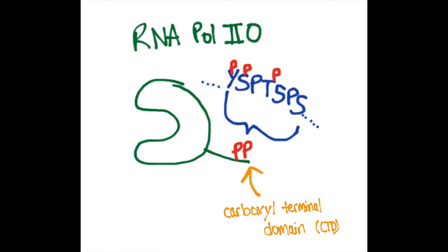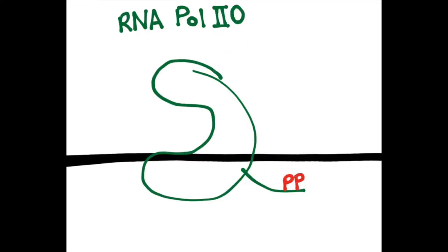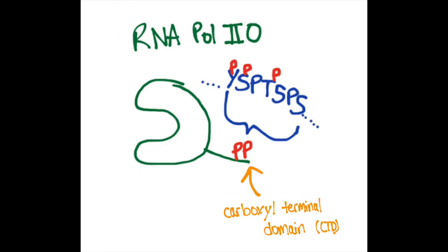There are many repeated heptads throughout the CTD region, and the phosphorylation pattern can vary between them, meaning the amino acids that are phosphorylated are not always the same. For simplicity, in this example we are only going to show two phosphorylations on the CTD region to represent the IIo form of RNA polymerase II. The many heptads and the phosphorylation states of their respective amino acids are not shown.